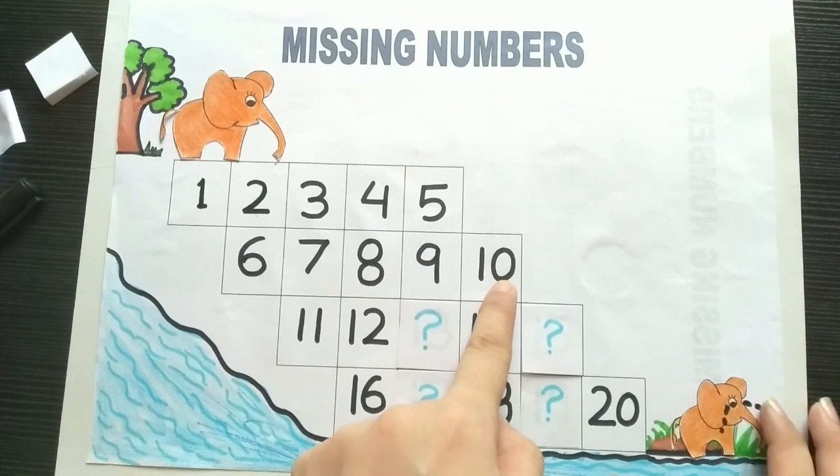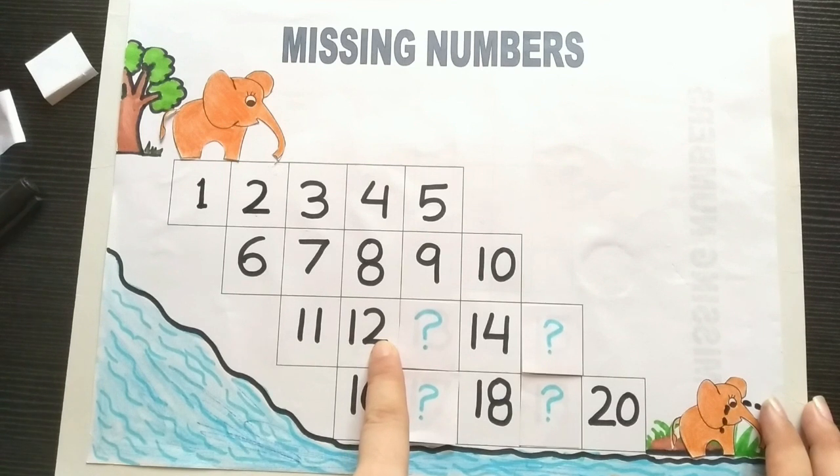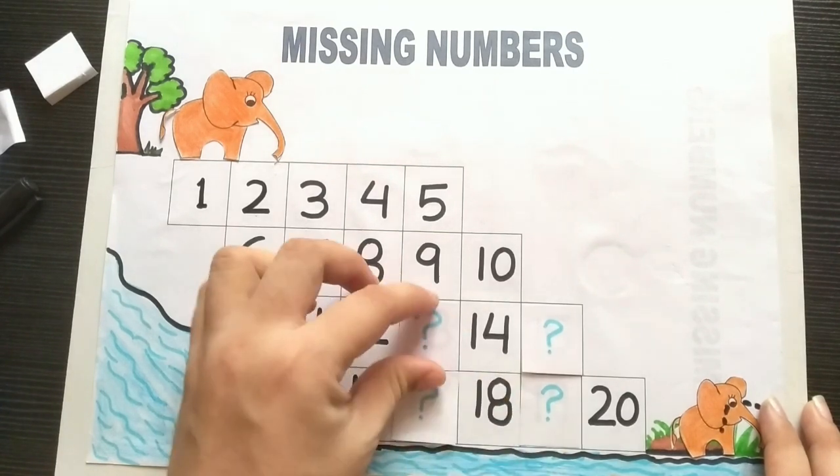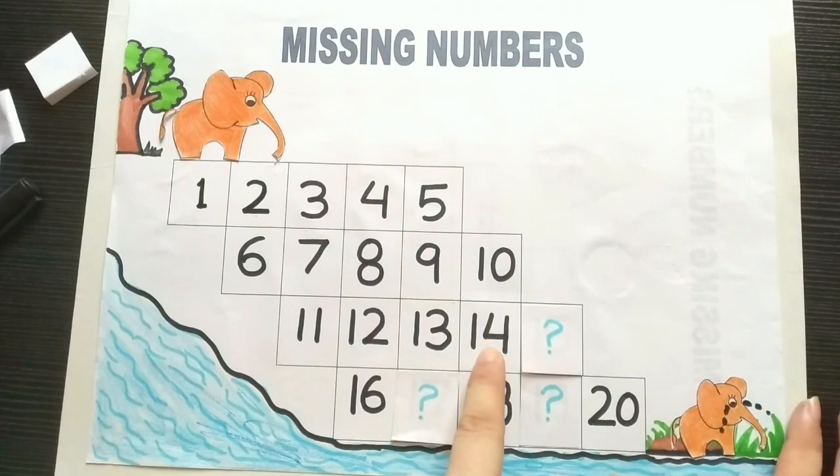Nine, after nine is ten. After ten is eleven, after eleven is twelve. Another missing number, what is the missing number here? What comes after twelve? Thirteen. After thirteen, fourteen. After fourteen is number...